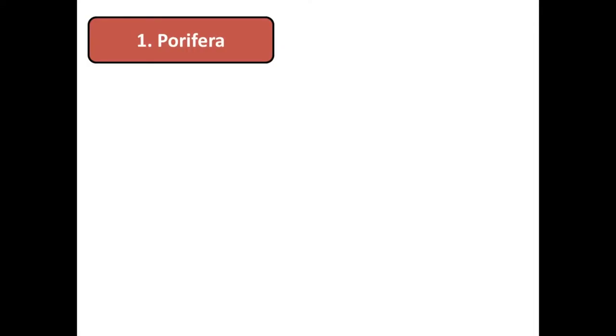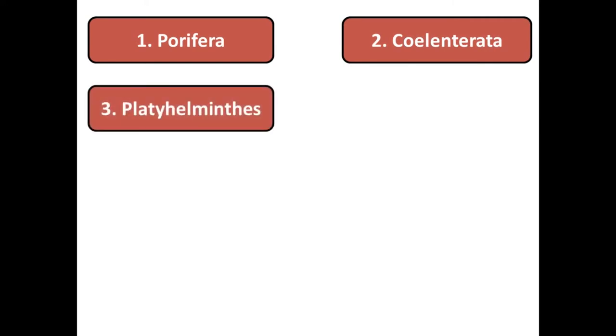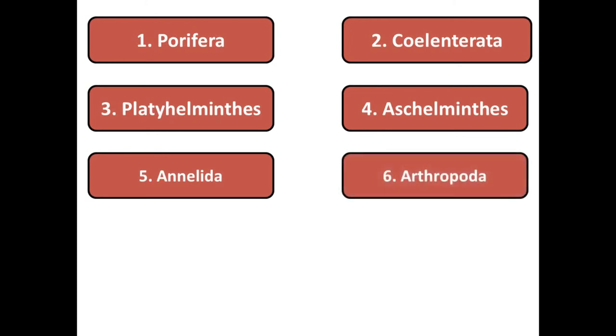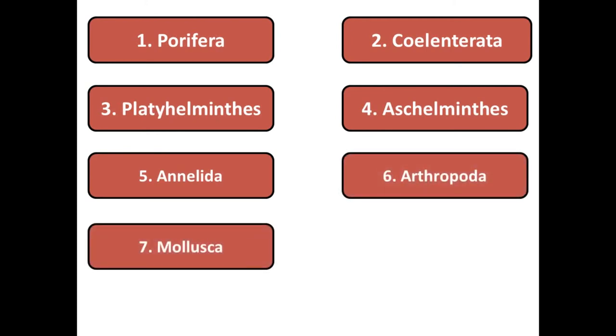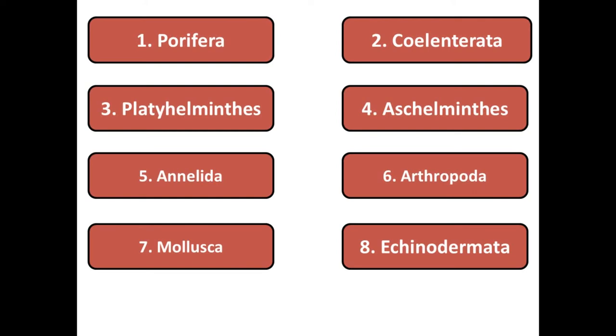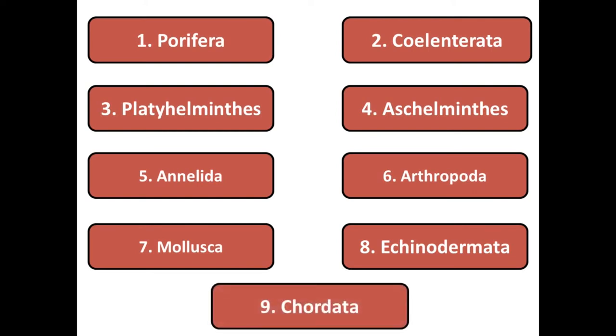These were the criteria for classification. Now we are going to start the classification of the animal kingdom. The animal kingdom is classified into nine phyla: Porifera, Cnidaria, Platyhelminthes, Aschelminthes, Annelida, Arthropoda, Mollusca, Echinodermata, and Chordata. We will discuss these nine phyla one by one.